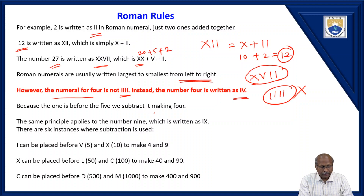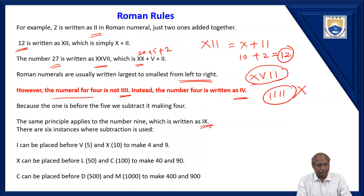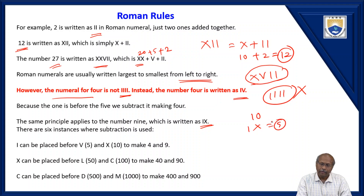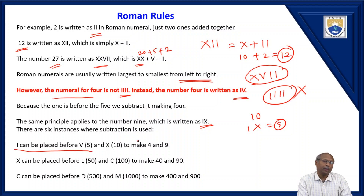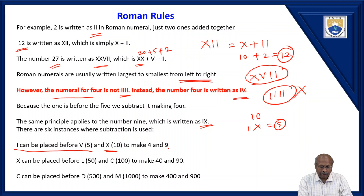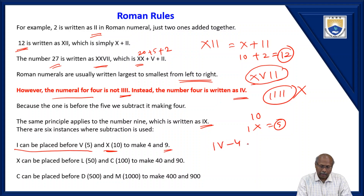Similarly, 9 is written as IX because X means 10. If you write I before X, 1 will be subtracted — 10 minus 1 is 9. So I can be placed before V to get 4, and I can also be placed before X to get 9. IV is 4, IX is 9.